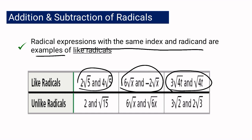In here, they are considered unlike radicals. Obviously, we have here a whole number and a radical expression, so they are unlike. We have 6 square root of x and square root of 6x — they have the same index of 2, but the radicand here is x and the radicand here is 6x, so they are also unlike radicals. And in here, the radicand is 2 and the radicand is 3, so they are also considered unlike radicals.